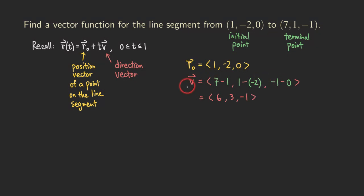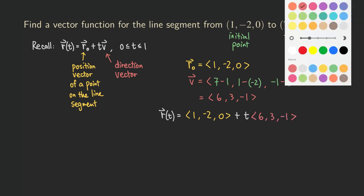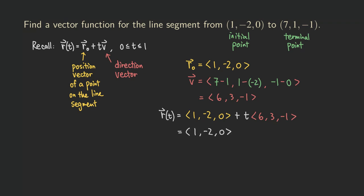Now we have both R0 and V, so we are ready to fill in the function. R of T equals the vector 1, negative 2, 0 plus T times the direction vector 6, 3, negative 1. Distributing the T gives us 6T, 3T, and negative T. Adding the two vectors together, we get 1 plus 6T, negative 2 plus 3T, and negative T. Don't forget the restriction: T goes from 0 to 1.